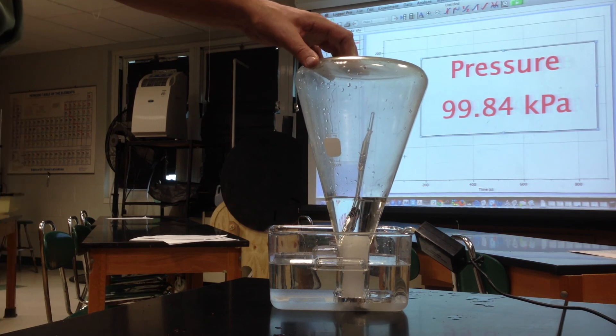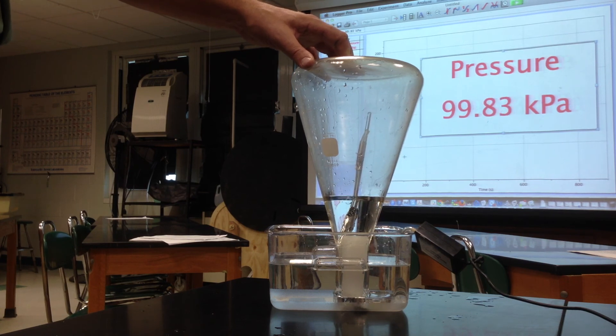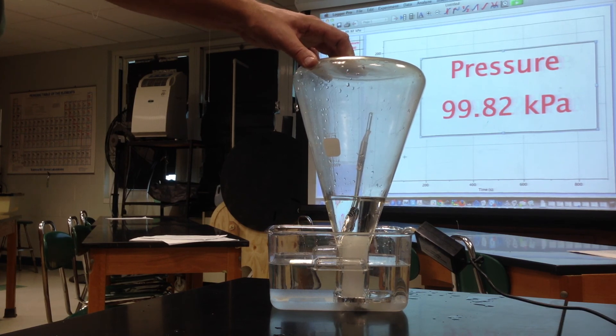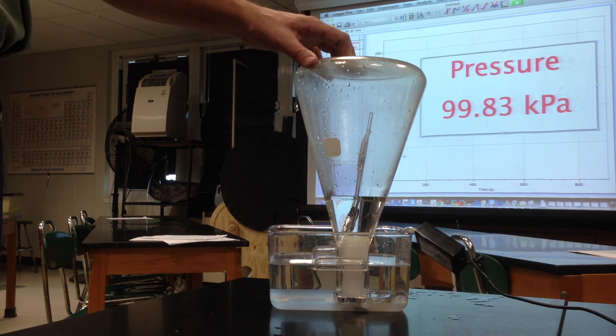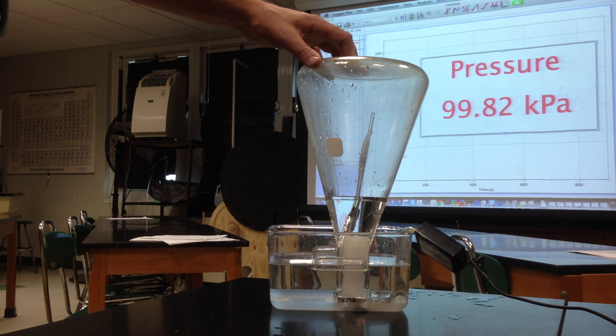The candle was burning, made the air inside the flask warm, the air inside the flask expanded. Because it was in a sealed container the air escaped out, that was the bubbling. So there were some moles of gas leaving, temperature increases.